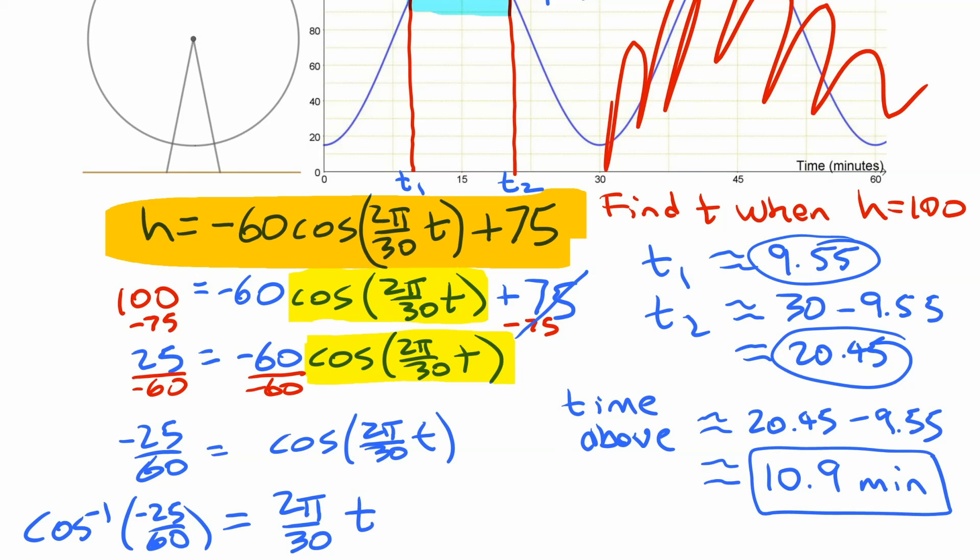All right, now what we've done in these last two parts here is one approach to solving this. This is the algebraic approach to solving, where we substitute in a value, and we solve for the variable that remains in the equation. We can also solve things graphically, which is what we're going to do next.